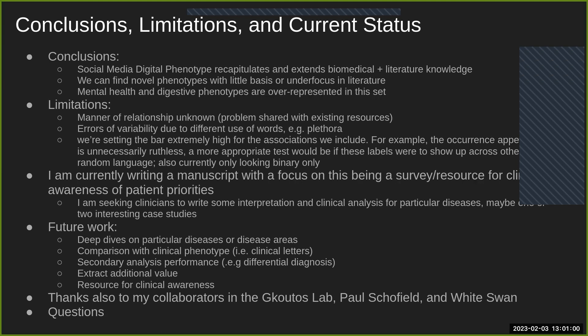In public data we also have errors of variability. For example, there's a phenotype called 'plethora' which has a specific medical meaning related to thrombocytopenia, but also has a common English meaning. This leads to a curious situation where the phenotype 'plethora' becomes associated with schizophrenia because people are talking about a plethora of different things. We have to perform a degree of interpretation and recognize we're not always using these phrases in the same context.